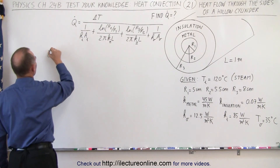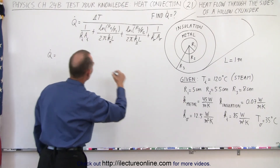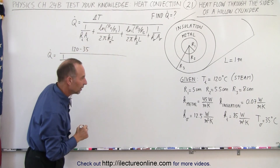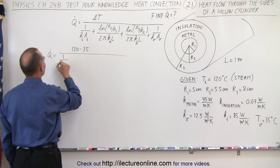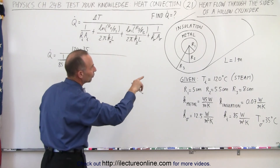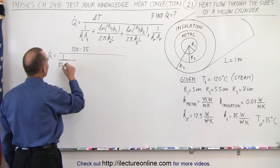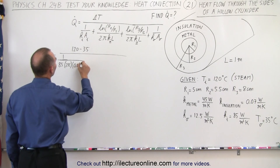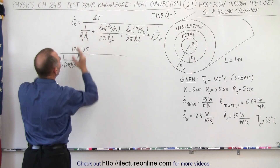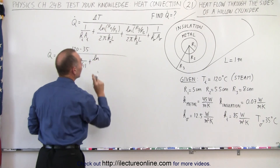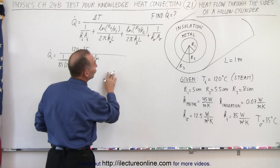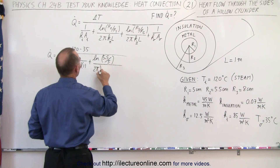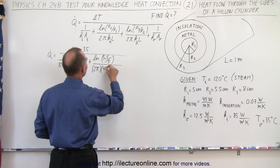Q-dot is equal to the difference in temperature, 120 minus 35, all divided by: 1 over H on the inside, which is 85, times the area on the inside. The area on the inside is the circumference times the length — the length is one meter — so it would be 2π times the inside radius converted to meters, 0.05, times 1. Then plus the natural log of R2 to R1, which is 5.5 over 5 — no conversion needed since it's a ratio — divided by 2π times K for the metal, which is 45, times the length 1.